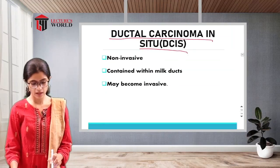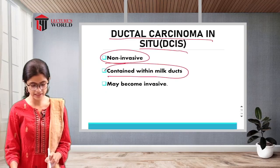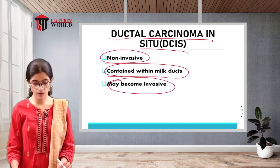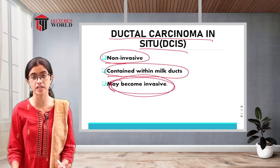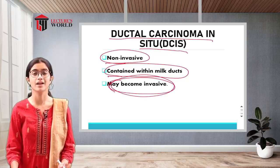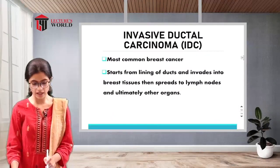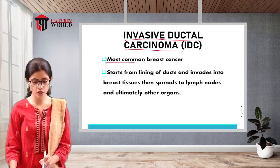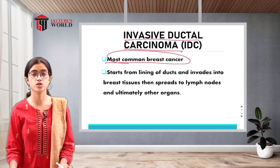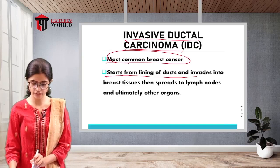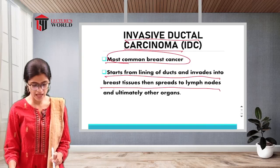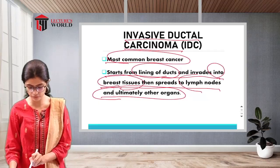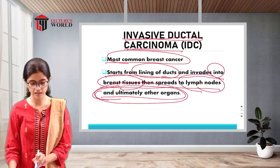Ductal carcinoma in situ (DCIS) is non-invasive and contained within the milk ducts. However, it may become invasive if left untreated. Invasive ductal carcinoma is the most common breast cancer. It starts from the lining of the ducts, invades into breast tissues, then spreads to lymph nodes and ultimately other organs.